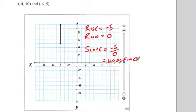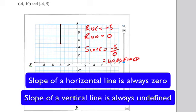The two things we've learned in the last two questions are that the slope of a horizontal line is always 0, and the slope of a vertical line is always undefined.